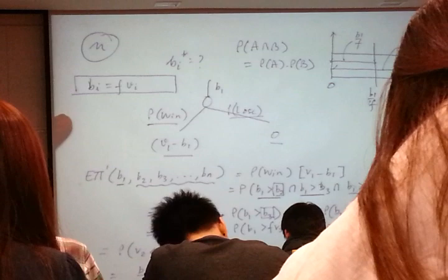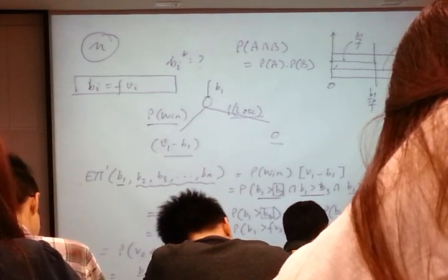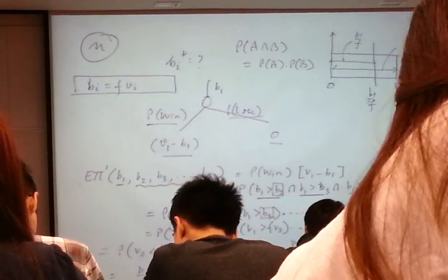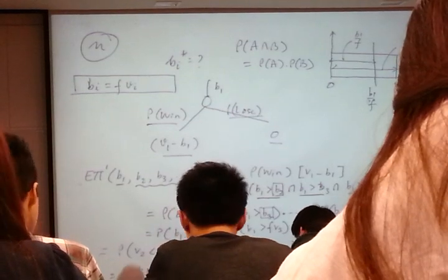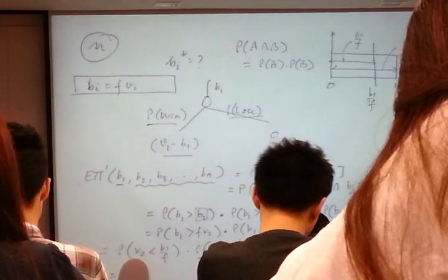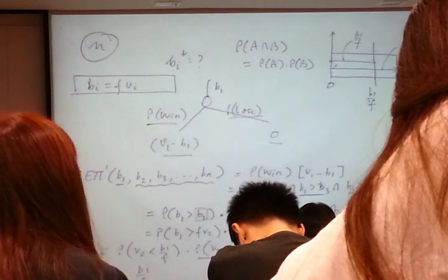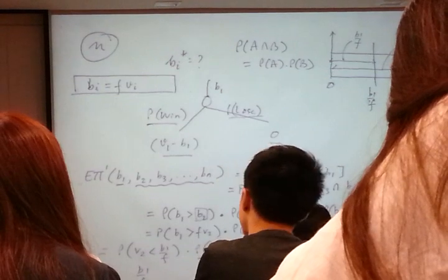Look at this. What is the probability that another randomly drawn bidder has a valuation less than B1 over F? Same thing. Bidders' valuations are independent of each other. Therefore, the probability that the second bidder has a valuation less than B1 over F will be the probability that the third bidder has a valuation less than B1 over F.